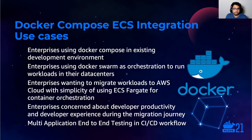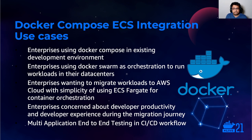Before the demo, let's see some use cases this integration can solve. Firstly, developers already using Docker Compose to power their local development environment may also be using Docker Swarm to orchestrate workloads in their data centers. There are customers looking to migrate workloads to AWS Cloud due to the simplicity of ECS Fargate for container orchestration. There are customers concerned about developer productivity and developer experience during the entire migration journey. Lastly, customers want to orchestrate multi-application end-to-end in their CI/CD pipelines — and that forms a great use case for Docker Compose ECS integration.